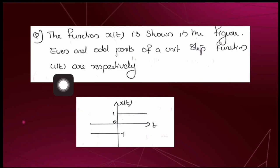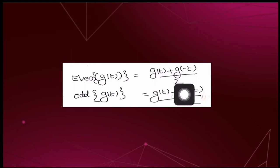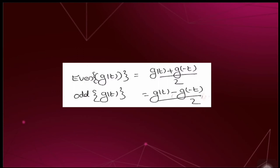Do you know how to find the even and odd parts of a continuous time signal? Suppose we have a continuous time signal g(t). Then its even part is defined as [g(t) + g(−t)] / 2, and its odd part is defined as [g(t) − g(−t)] / 2. In this question we need to find [u(t) + u(−t)] / 2 and [u(t) − u(−t)] / 2.